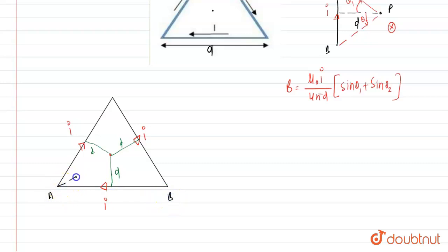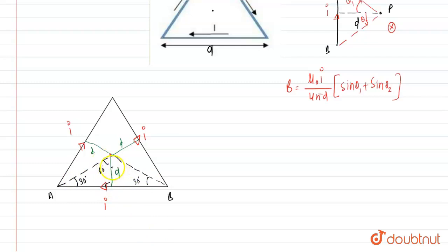Connecting the center O to the vertices, the equilateral triangle gives half-angles of 30° at each end of a side, so θ₁ = 30° and θ₂ = 30°. Similarly, the angle from the center to the midpoint of the side is 60°, and all corresponding angles are equal by symmetry.